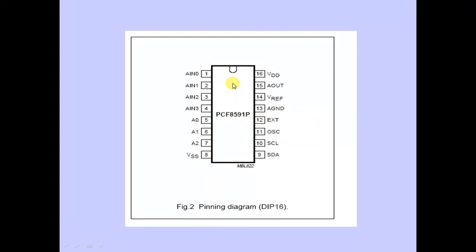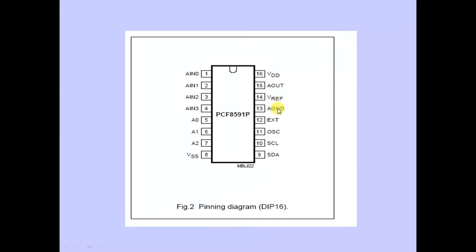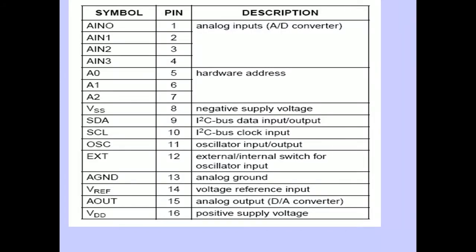The device allows four analog inputs and one digital output. To get digital data in ADC mode, the master sends clock cycles to the slave. For DAC mode, apply digital data and you will get an analog output from pin 15 (AOUT). Using AOUT and analog ground together, the PCF8591 functions as a DAC device.